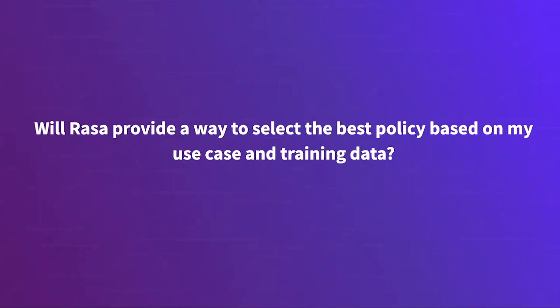Will Rasa provide a way to select the best policy based on my use case and training data? It's a very sensible question. We have some tools for doing cross-validation and a typical train-test split, and we're very keen to provide better guidance — especially on DIET, which is brand new. We'll have to see what the best configuration is on everybody's different datasets, so we're keen to get everyone to try it out and share their experiences. The same is true for dialogue policies.